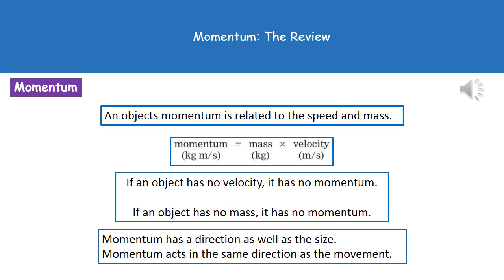First thing to note then, is because we're timesing the mass by the velocity, if either the mass or velocity is zero—so if the object has no velocity, so it's not moving, or it's got no mass—then it would have no momentum.